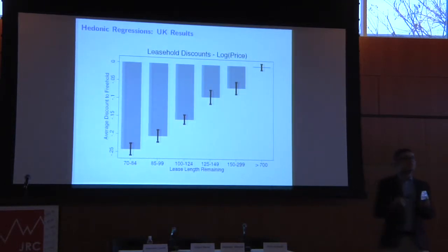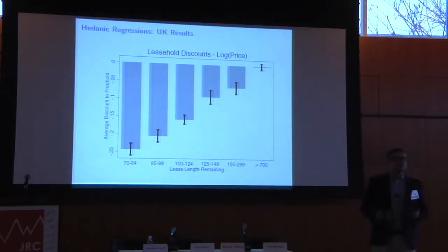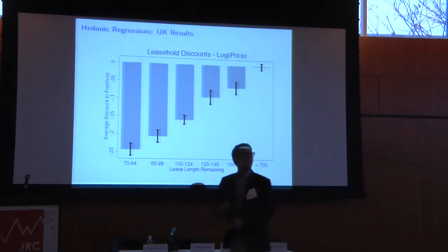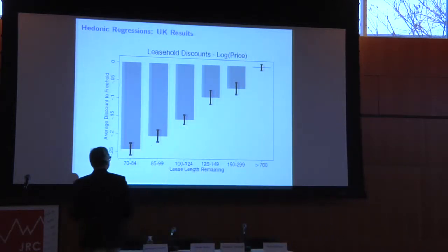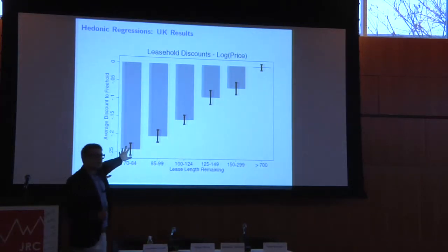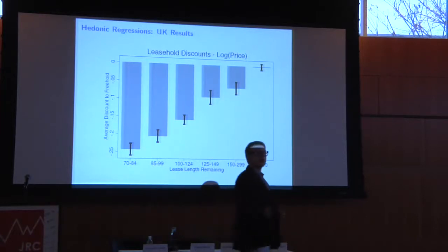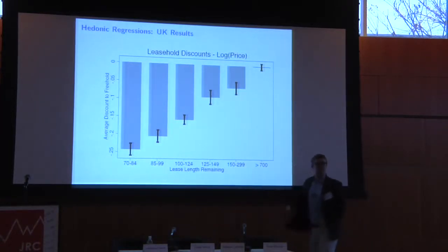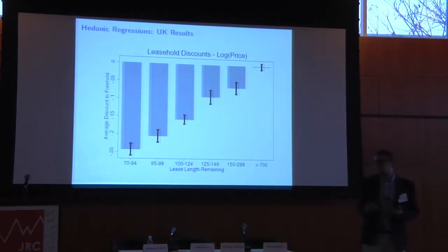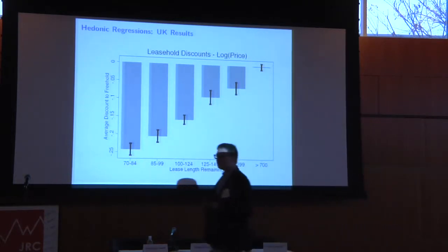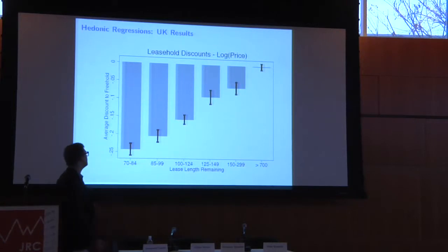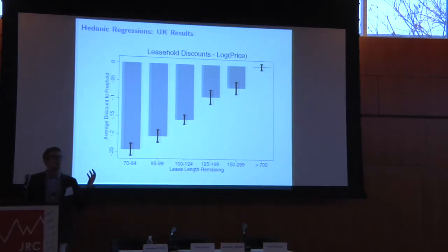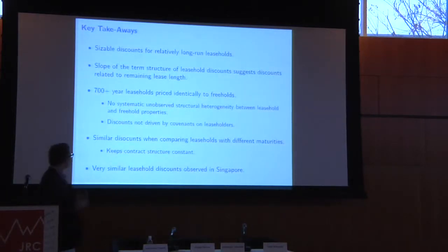We also estimate these discounts just within the leasehold category, taking 999-year leases as the excluded category rather than the freehold. This keeps all contractual concerns and leaseholder restrictions constant — the only difference is the remaining duration. Even when we control for initial lease length, those discounts remain almost identical. These are the key takeaways: sizable discounts for long-run leaseholds, a term structure slope related to remaining lease length, and the 700-year-plus result ruling out systematic unobserved structural heterogeneity.